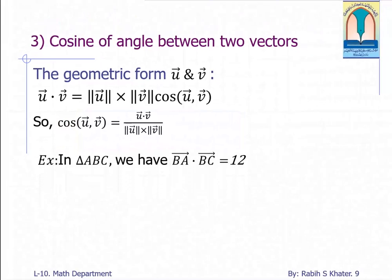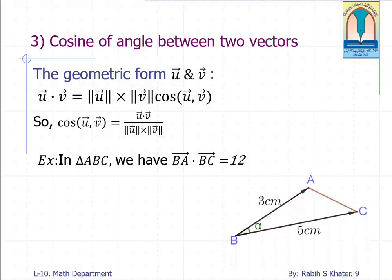As an application in triangle ABC we have the dot product of the two vectors BA and BC. Now calculate cosine of alpha.